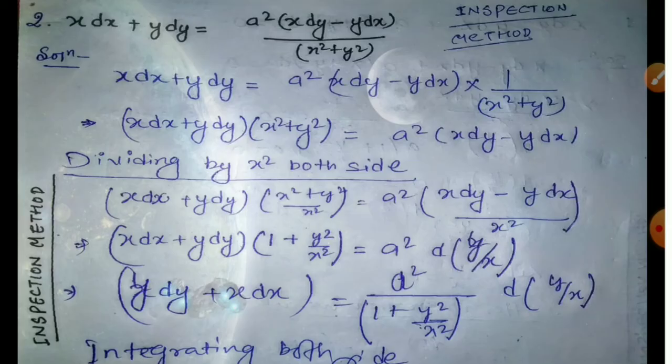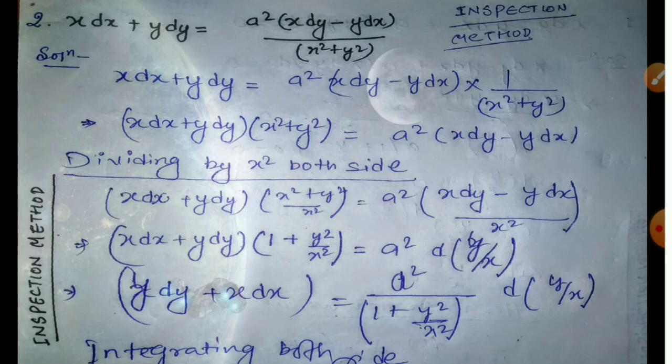Now the next question: x dx + y dy equals a²(x dy minus ...). We notice this has the form of d(xy) — but in d(xy), we had x dy plus y dx. Here there is a multiplier, so we don't need to touch x dx + y dy. Because if we integrate it directly, it becomes straightforward. We use the exact form when different terms appear, like when y appears in dx terms — in that case we can't integrate directly, so we use exact method.